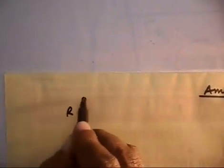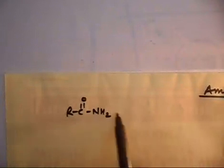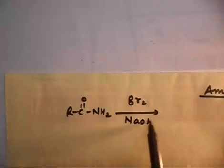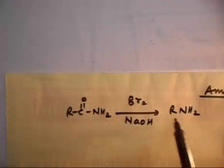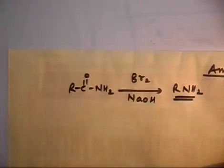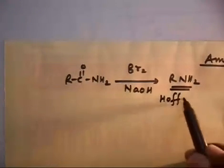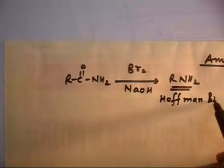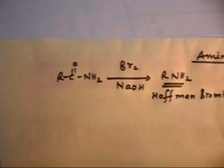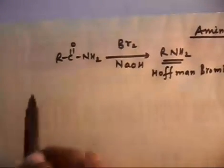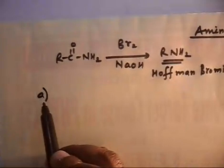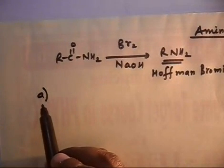These are three questions related to the Hoffman Bromide reaction. If you have an amide RCO-NH2 and treat it with Br2 and NaOH, you get the product RNH2 — the CO group is lost. This reaction is called the Hoffman Bromide reaction. These are three ABC short questions: predict the organic product when the following amides are treated with alkaline bromine water.